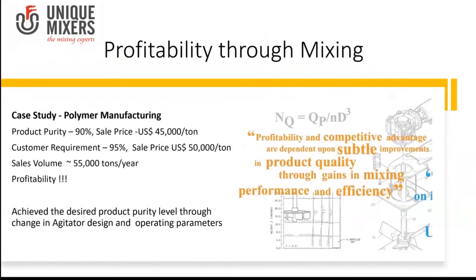Profitability through mixing is what business owners should be looking at. We will share a case study from a polymer company where products can be extremely high value. The company had a product purity of 90%, which was an acceptable norm, and that product sold in the market at $45,000 per ton. A customer requirement demanded the purity be increased from 90% to 95%, with a value of $50,000 per ton — an increase of $5,000 per ton.